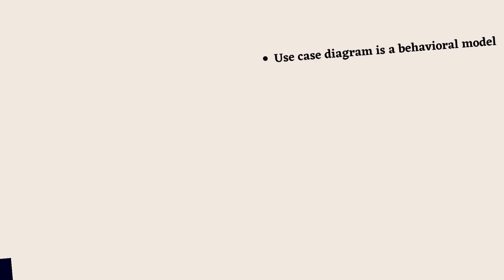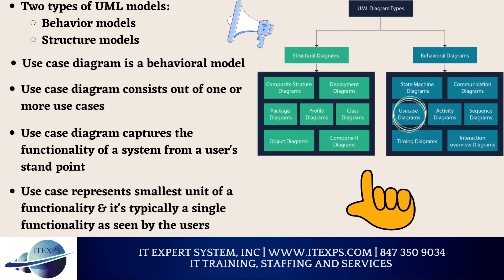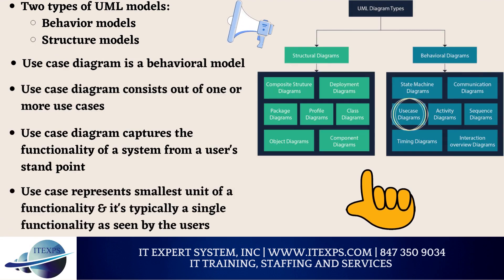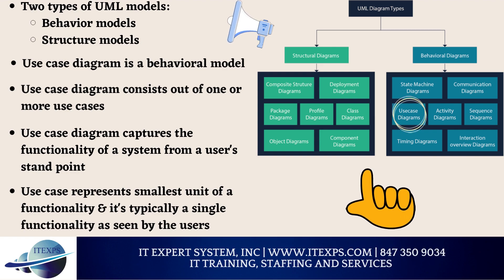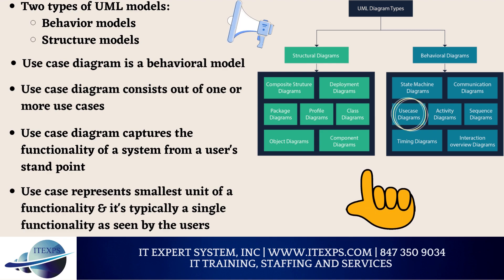UML has two types of diagrams when it comes to modeling. One is behavioral models, which focuses on the functionality of a system, or simply what the system does. Then we have structural models, which focuses on the technical details, like how the system functions. Use case falls under the behavioral model category.